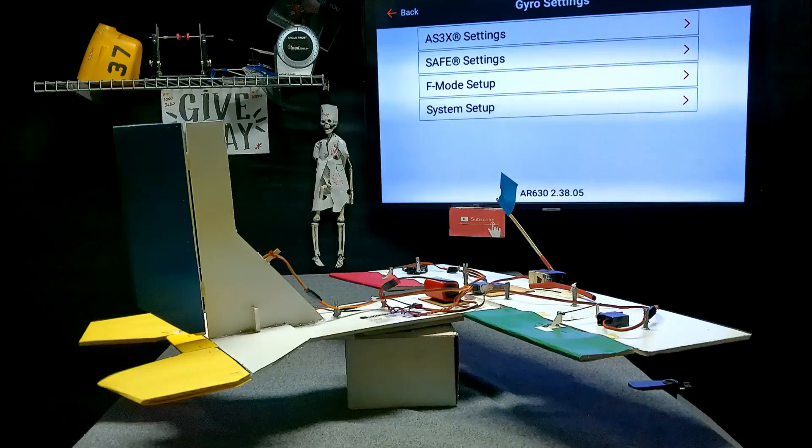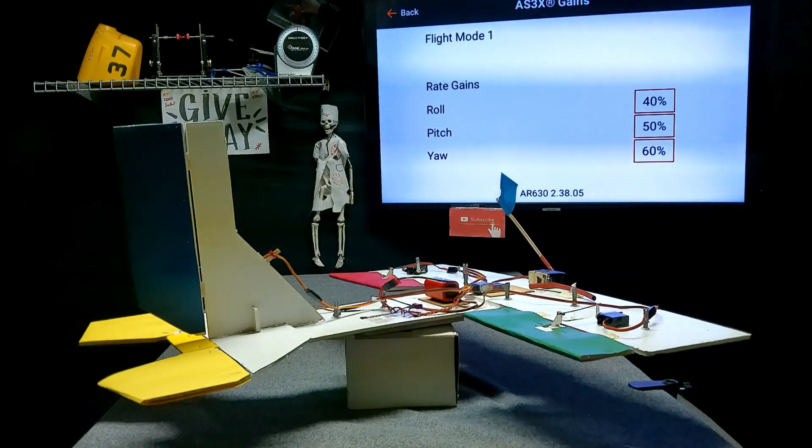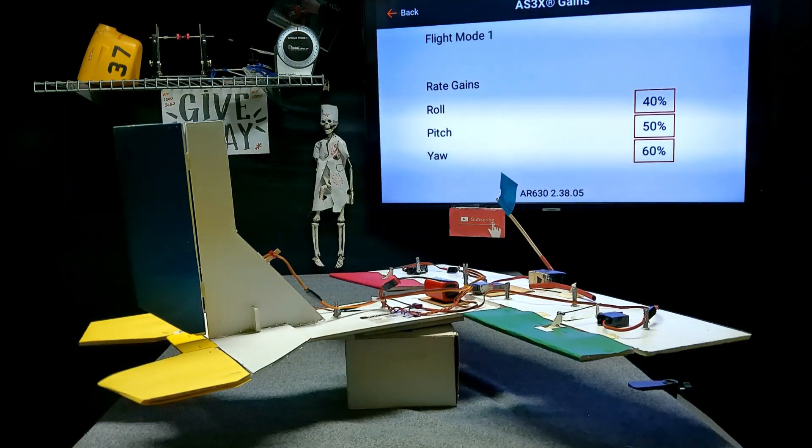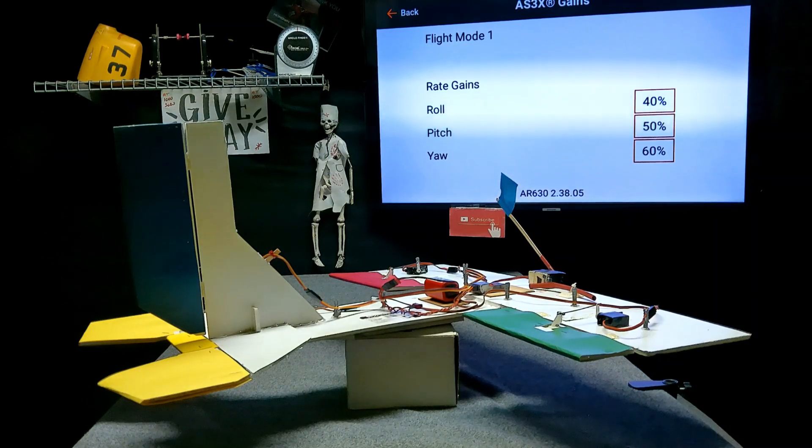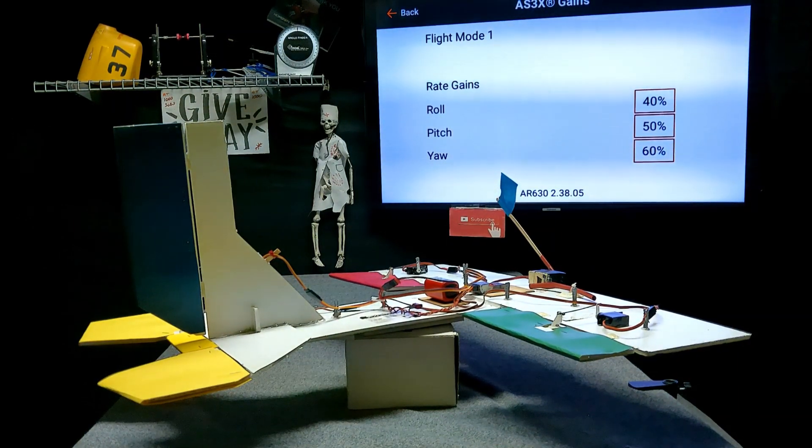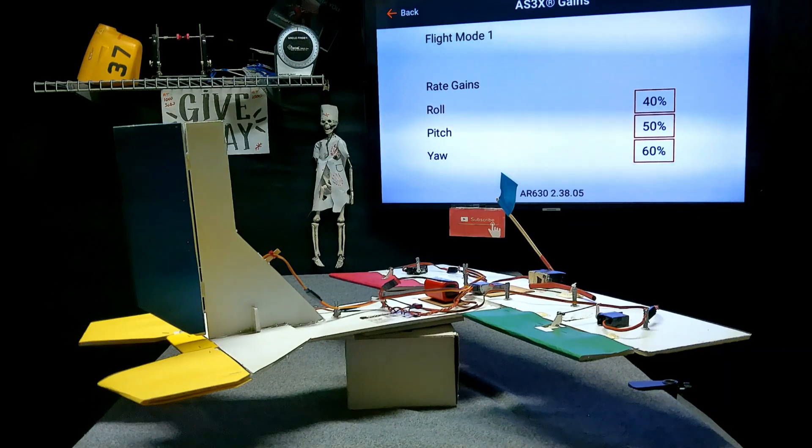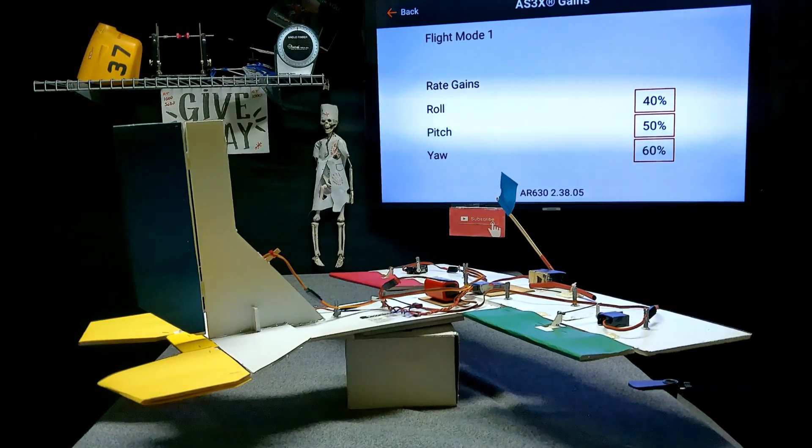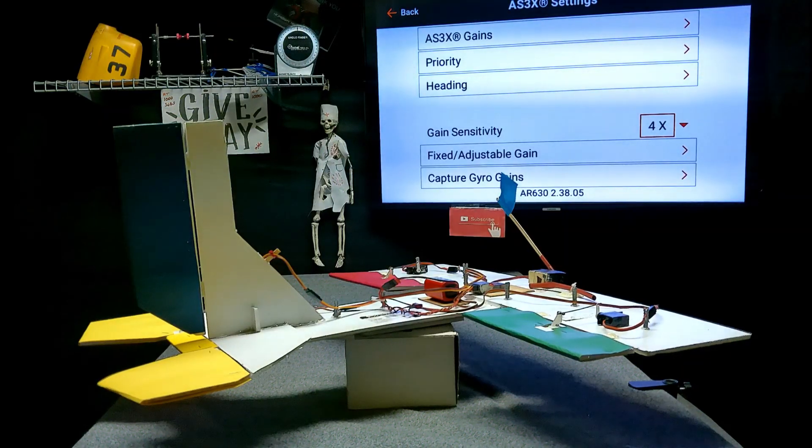AS3X gains—this is the default setting in the smart receivers. The original ones were the 636, the 6335, the 9335, and the 7335. Several of them did AS3X, and only the 636 did Safe Select. The default settings are 40-50-60: roll is 40 percent, pitch is 50, and yaw (which is the rudder) is 60. Let's get back out and I'll show you in real time exactly what that is.